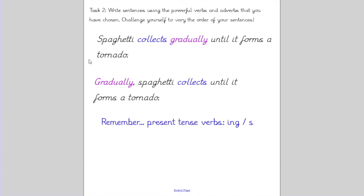Have a look at this one: 'Spaghetti collects gradually until it forms a tornado.' That's the sentence that I could write to describe what's happening in my first box there. Or I could change the order a little bit. Let's read that second one together and I'm going to use the sound 'ch' to represent a comma. Gradually, spaghetti collects until it forms a tornado. Can you recognize what that sentence is?